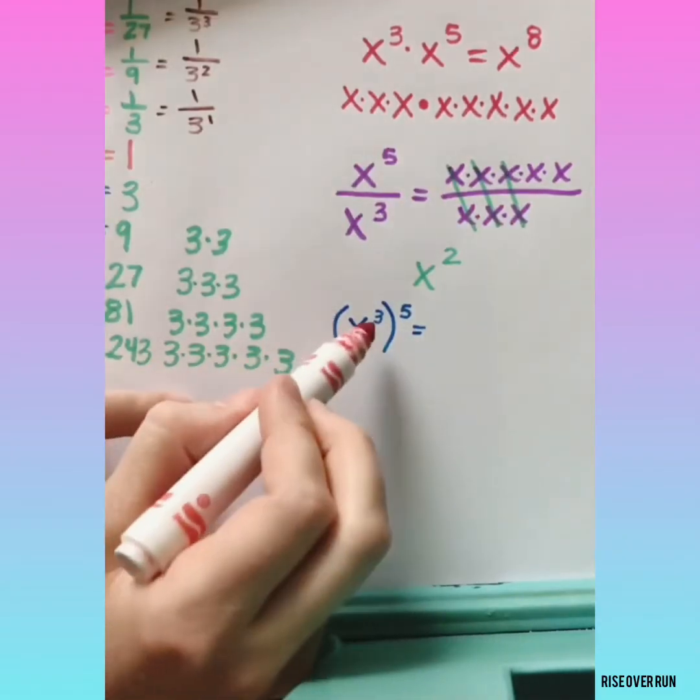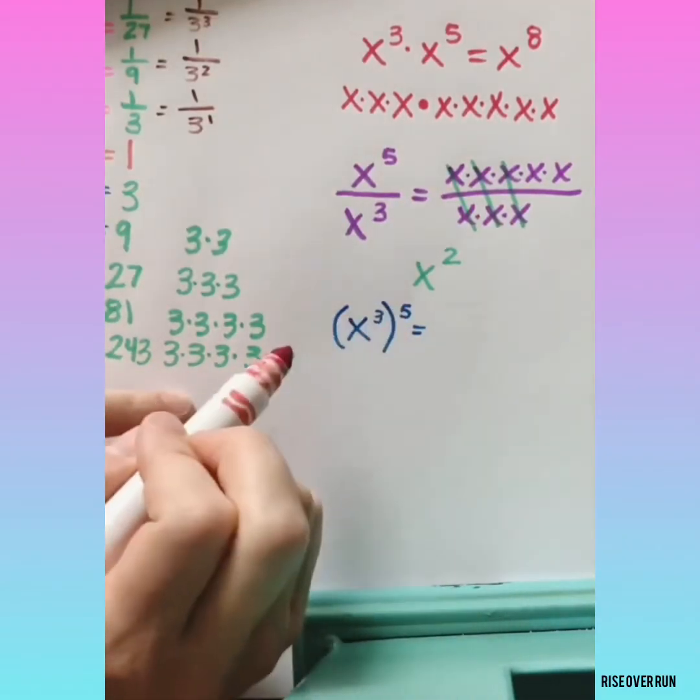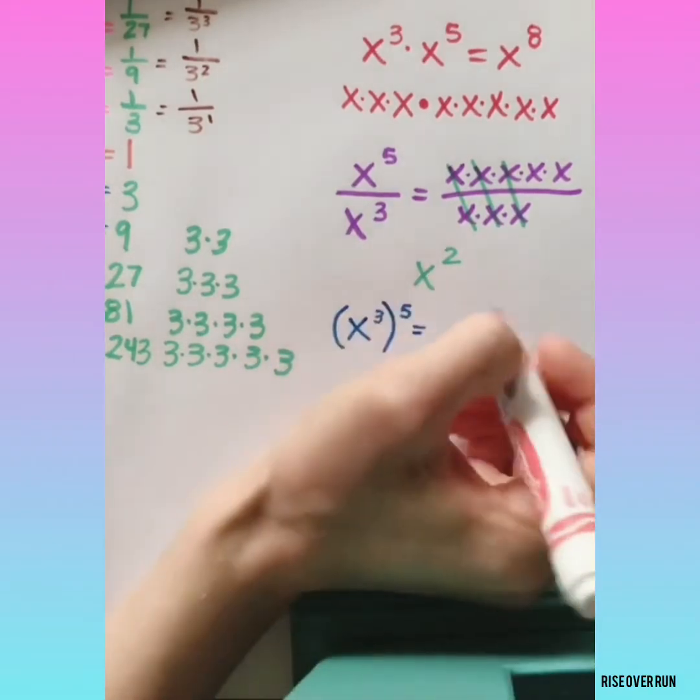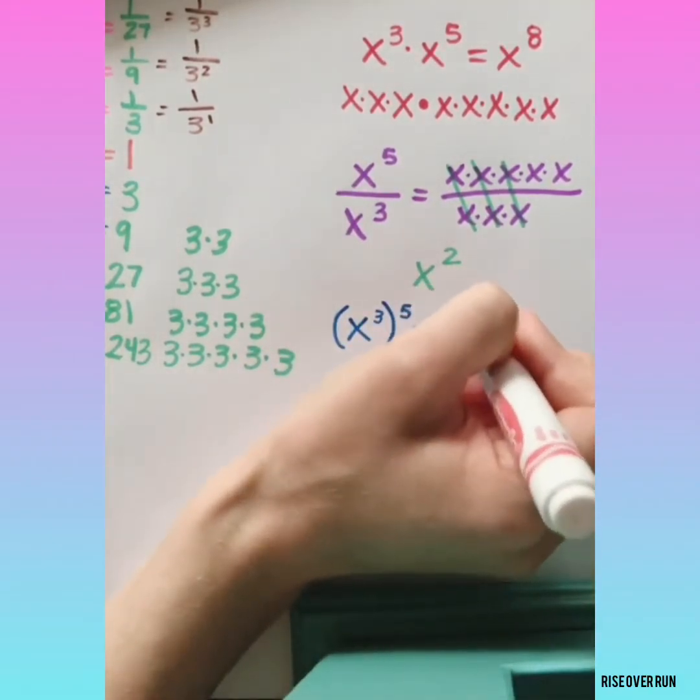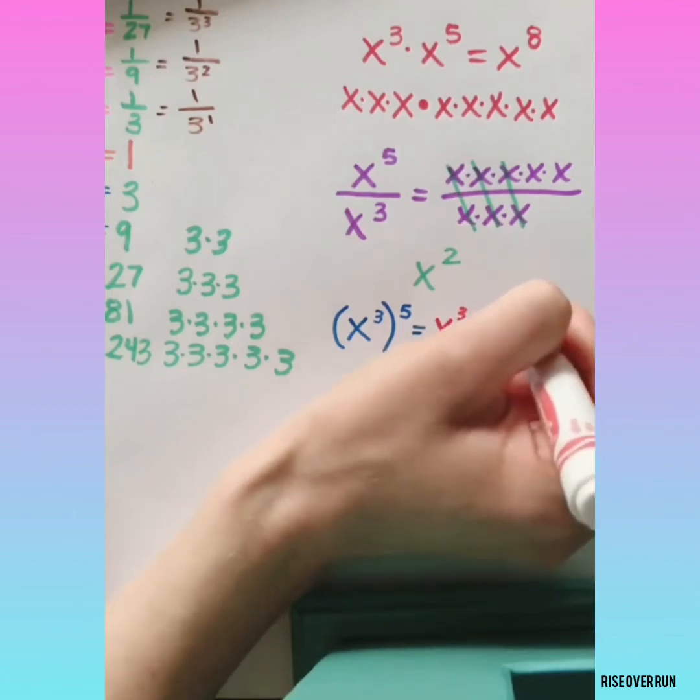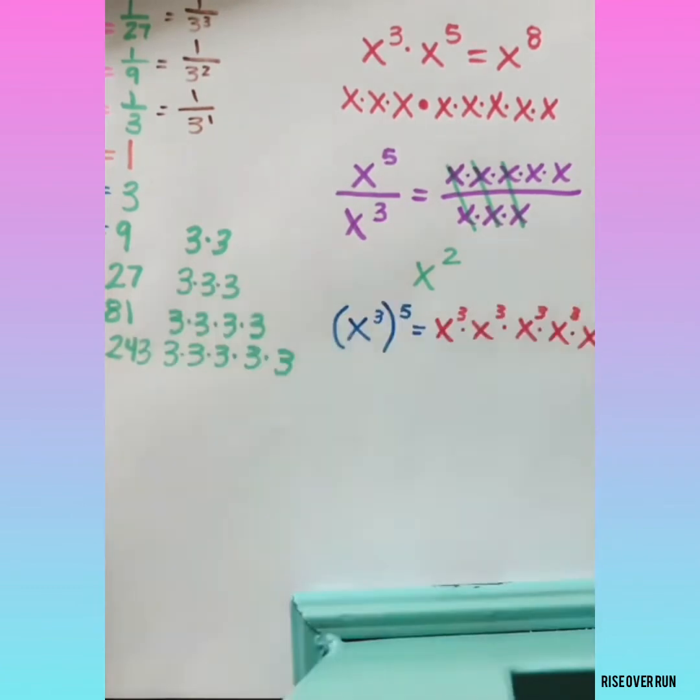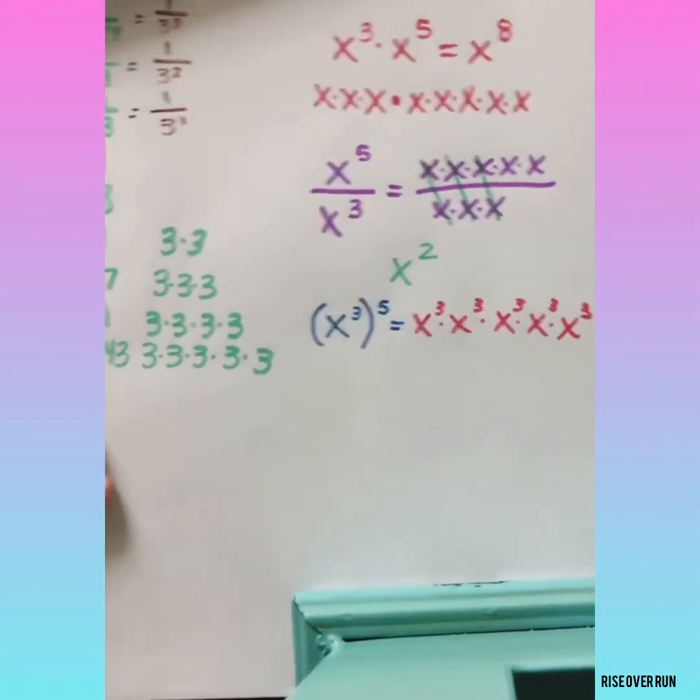Let's look at when we have an exponent raised to another exponent. A power raised to a power. This means we have x cubed multiplying 5 times.